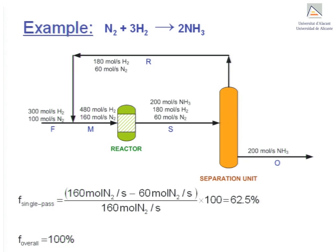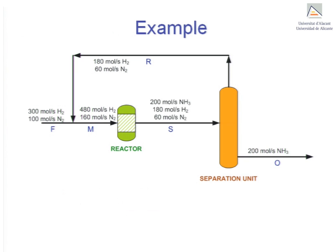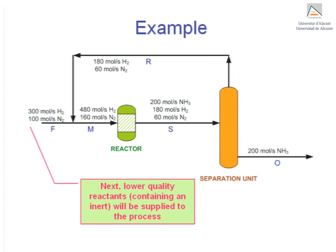Let's imagine that after some indefinite period of steady state operation, the reactants supplied now contain an inert substance, for example argon, because they are of lower quality. This impurity does not react and, being a noble gas, won't condense and leave the system with the ammonia. It will however leave the separation unit together with the unreacted nitrogen and hydrogen.